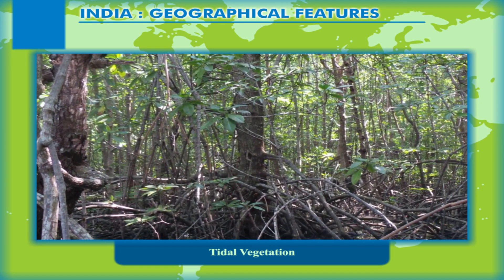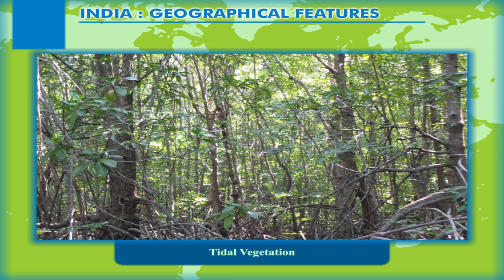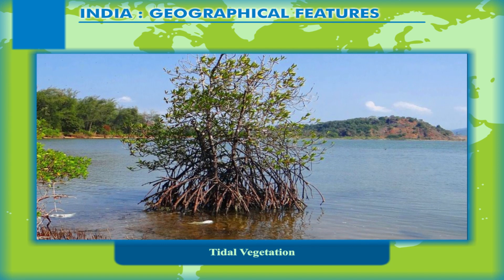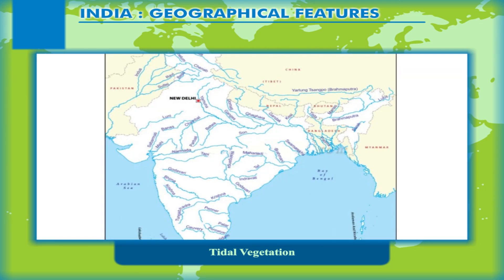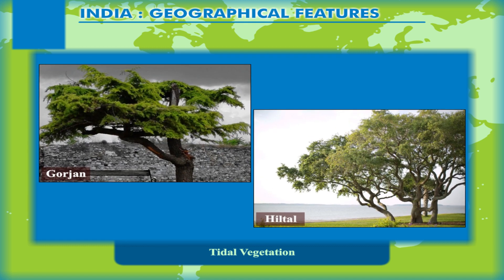Tidal Vegetation. This type of vegetation is also known as mangrove. It consists of trees found in tide-affected coastal areas. These trees have stilt-like roots that get submerged underwater during high tides. Mangrove forests are very dense. The tidal vegetation is found in the deltas of almost all the rivers that join the Bay of Bengal on the eastern coast of India, namely Ganga, Mahanadi, Godavari, Krishna, and Kaveri. In West Bengal, these tidal forests are also known as the Sundarbans, getting their name from the Sundari tree found in abundance there. Gorjan and Heel Tal are other important trees found in these forests.